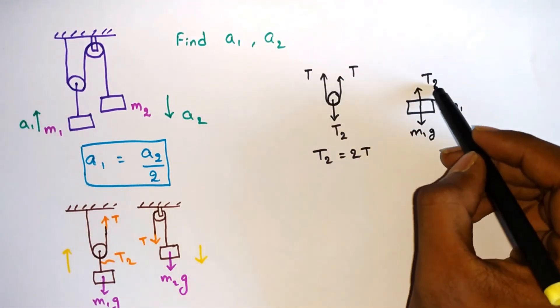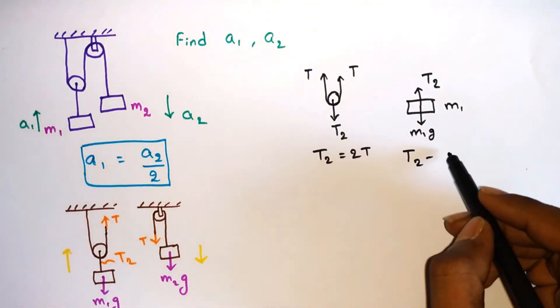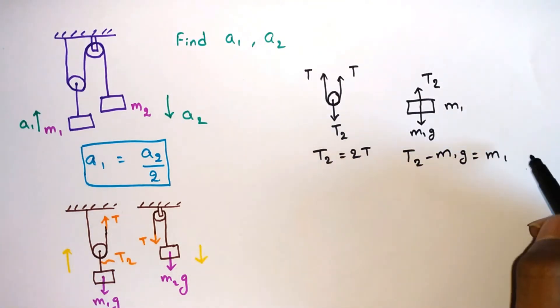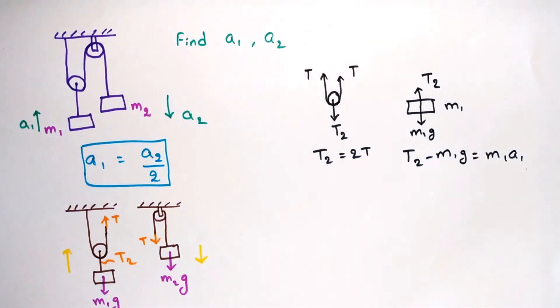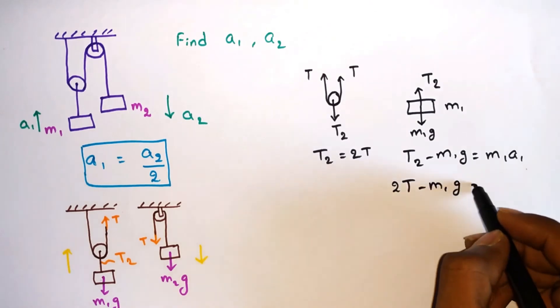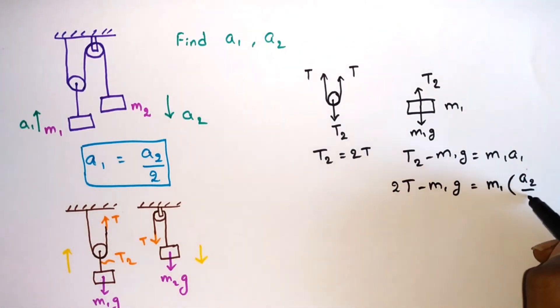Consider the forces acting on m1. The net force acting on m1 is T2 - m1g = m1a1. Now put T2 = 2T and a1 = a2/2. We will get this equation.